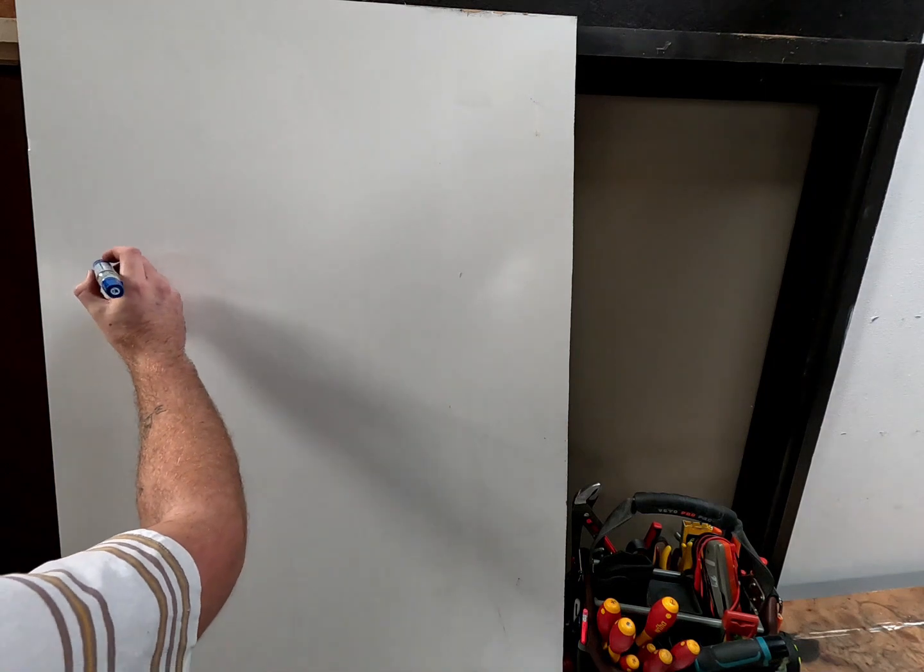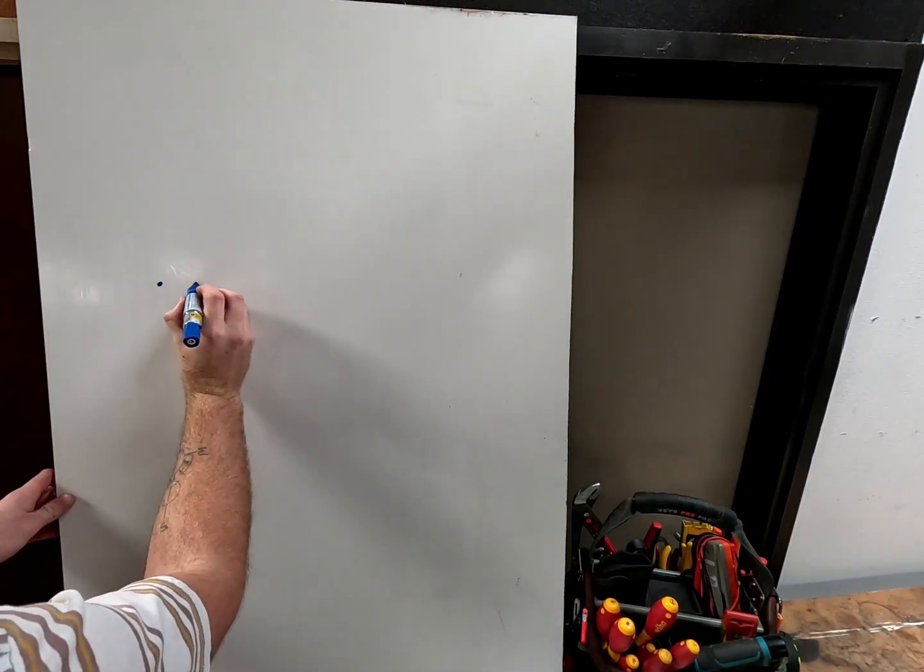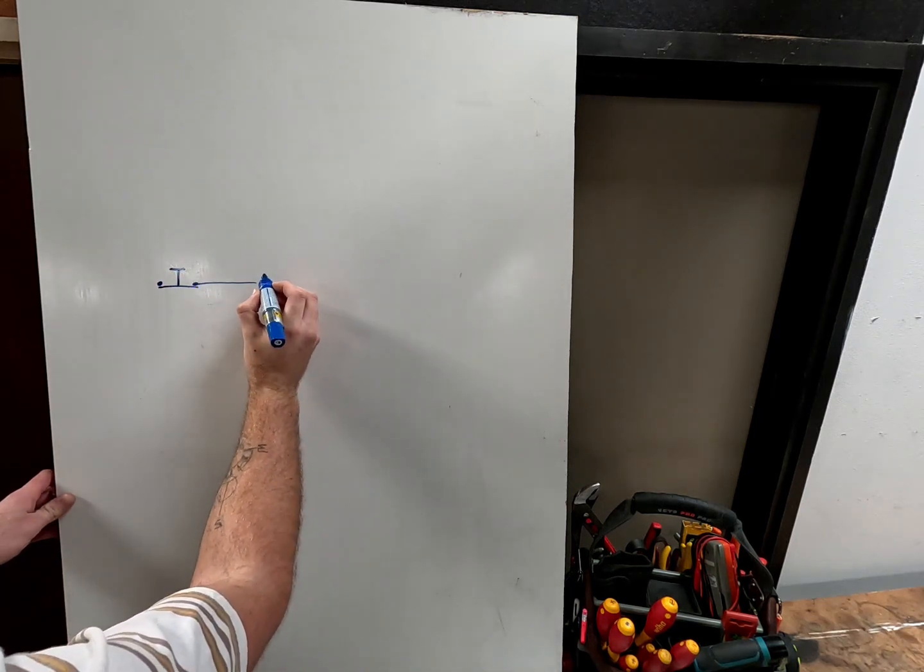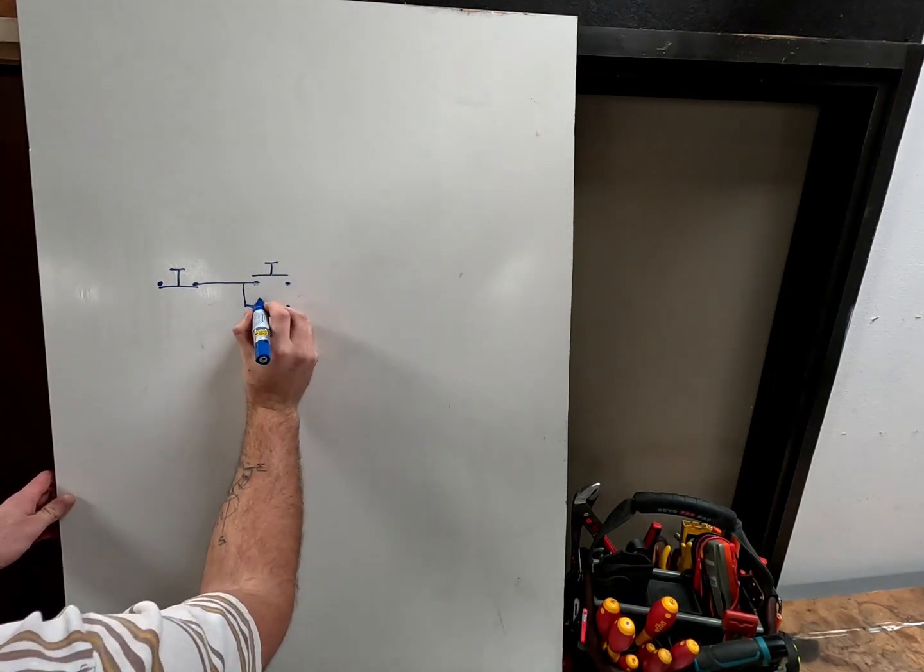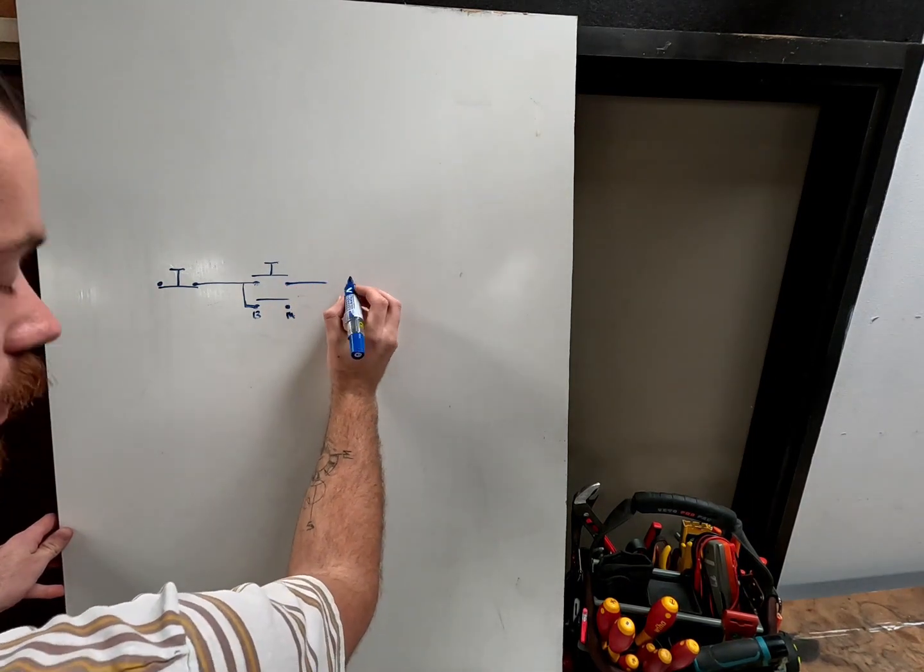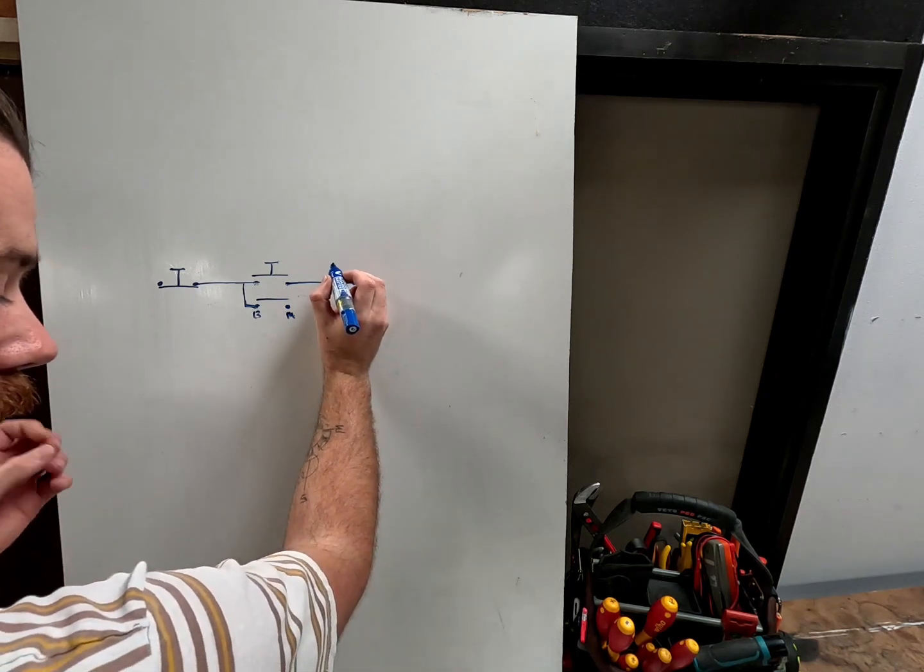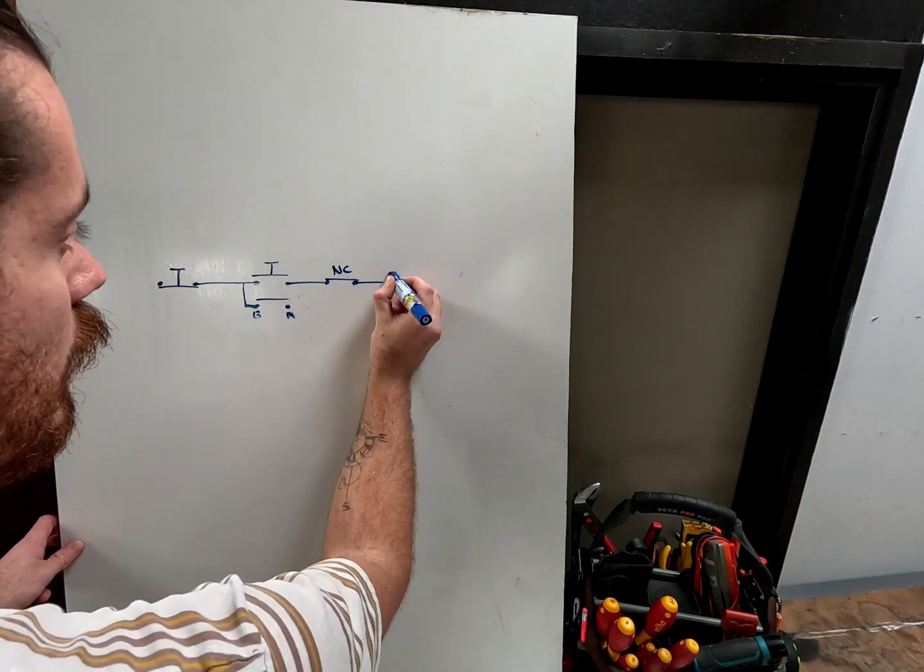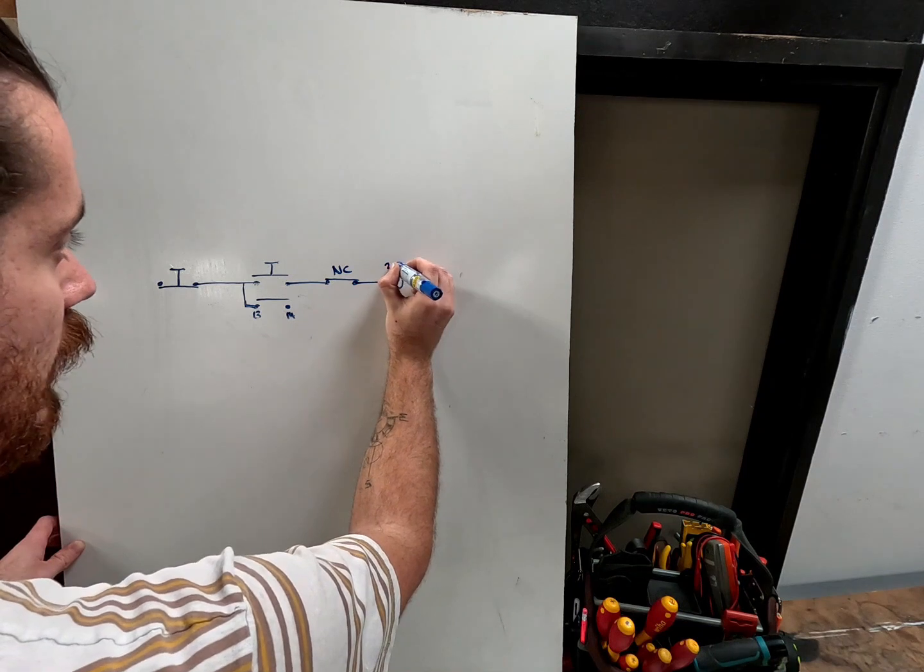On the top set of contactors we're going to have a stop button, a start button, goes to the auxiliary. We'll then go to an overload, which if you remember from last video is also a stop button. It's normally closed and then it will go to the coil. This first one is going to be the 24 volt coil.